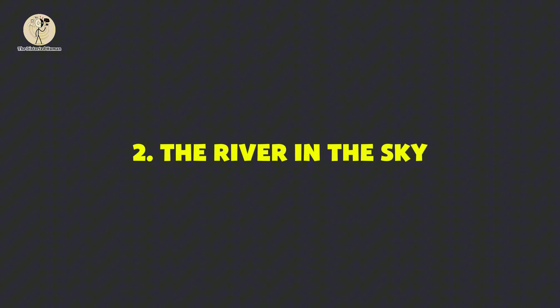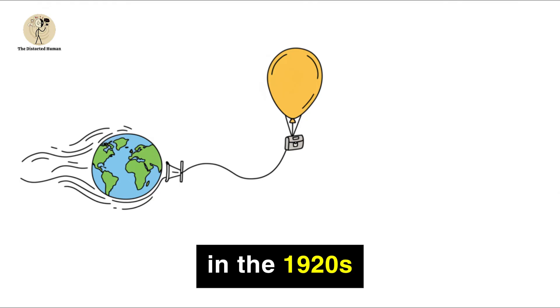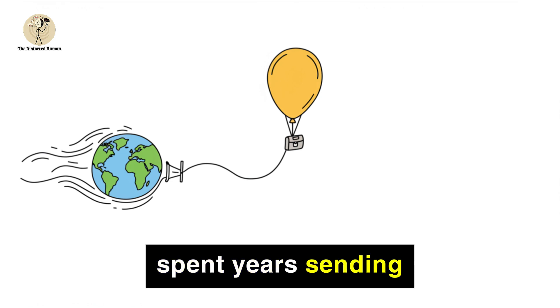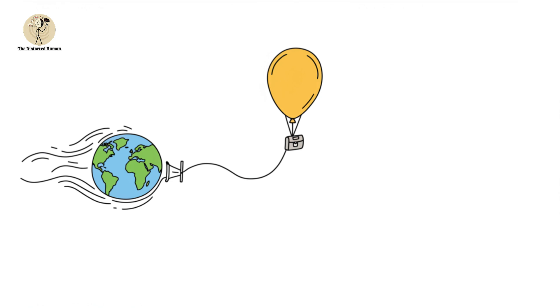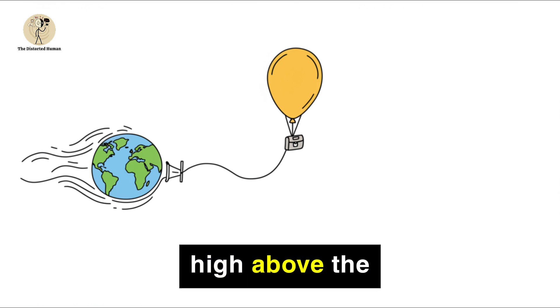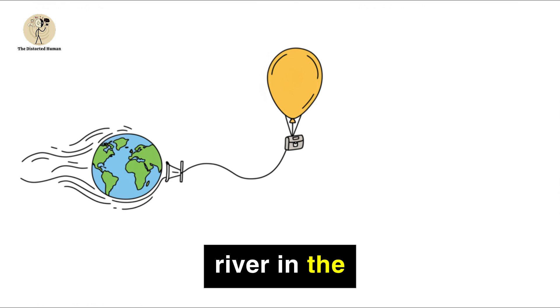The river in the sky. In the 1920s, a Japanese scientist named Wasaburo Oishi spent years sending balloons into the atmosphere. What he discovered was mind-bending, a powerful current of air flowing high above the earth, like a hidden river in the sky.